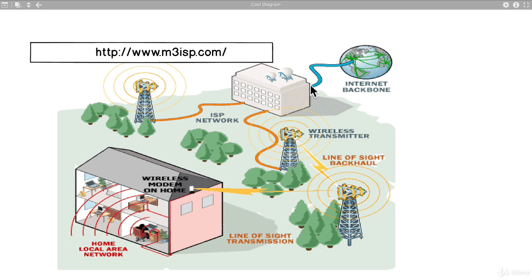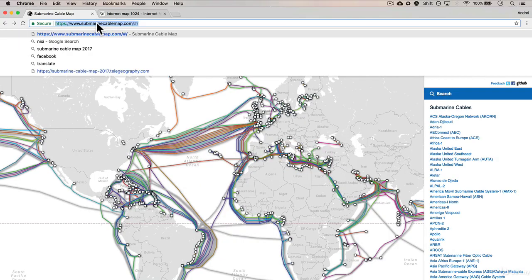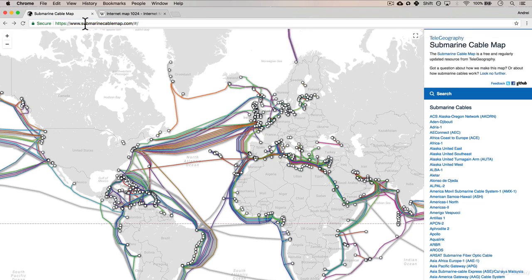And then the internet service provider, the ISP, is connected to this magical blue cable — that is the internet backbone. And something that's really important in this image is the fact that there's Wi-Fi, which is over the air, but at the end of the day, everything is kind of connected through cables. So some of you might be wondering what the heck this internet backbone thing is. So I found a really cool thing that we can do together — let's open up Google Chrome, and I'll post this website in the notes after this lesson, but if you go over here, you actually see the internet backbone.